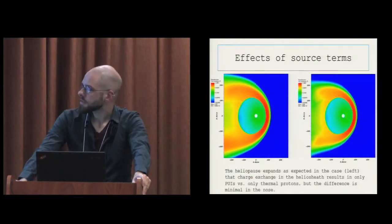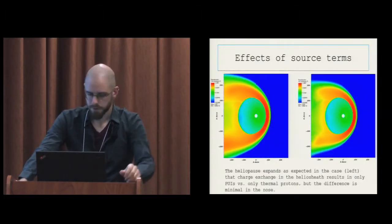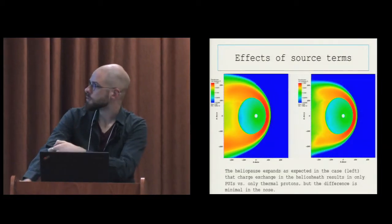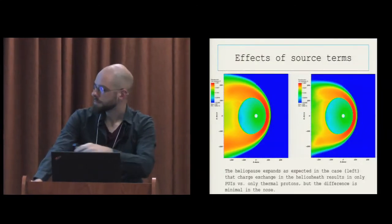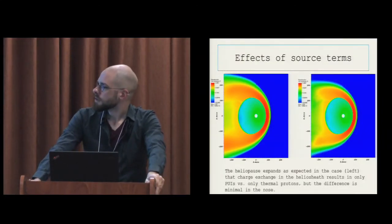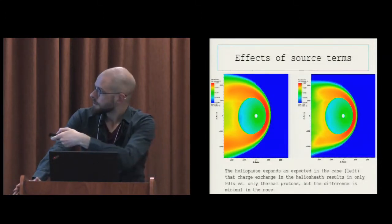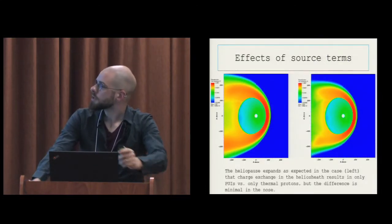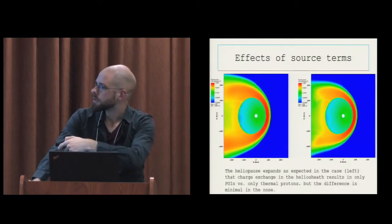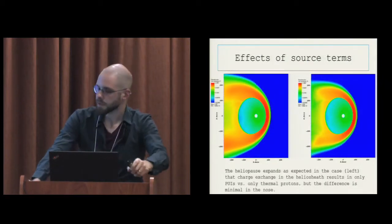Some other simulations have shown that the width of the heliosheath in the Voyager direction—Voyager 1 is around here, Voyager 2 is somewhere down here—this difference changes by 10 to 20 AU. My simulation did not show that. It's only one or two AU in the Voyager direction, but it can be significant in the tail. It's just too compressed toward the nose for that to make much difference.